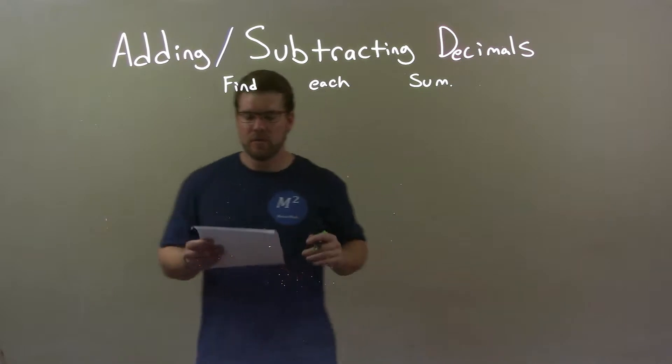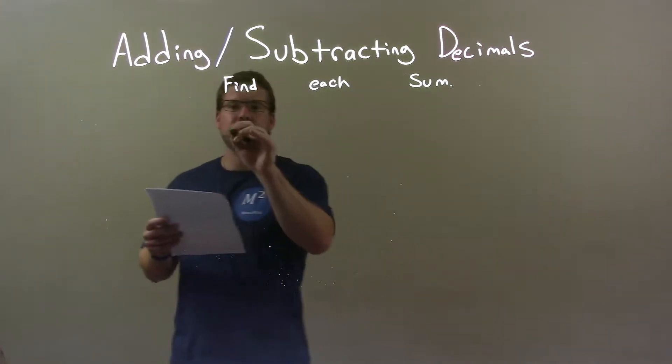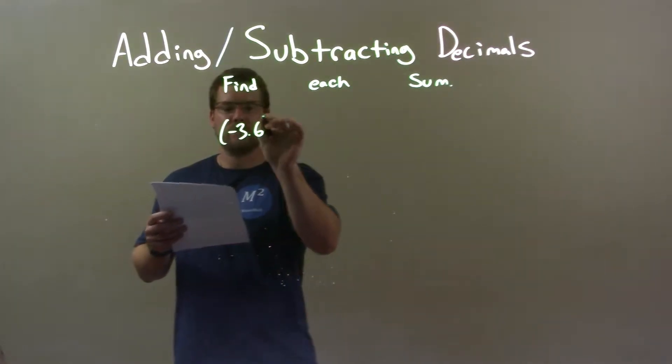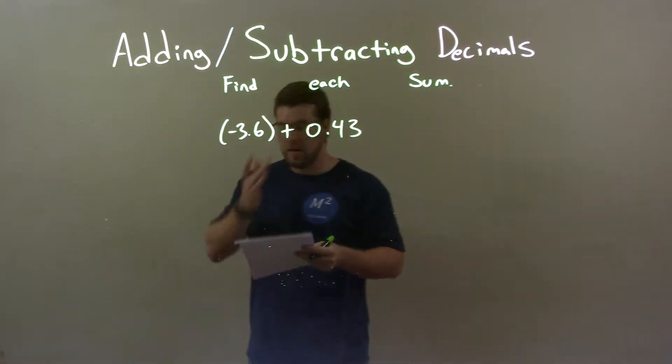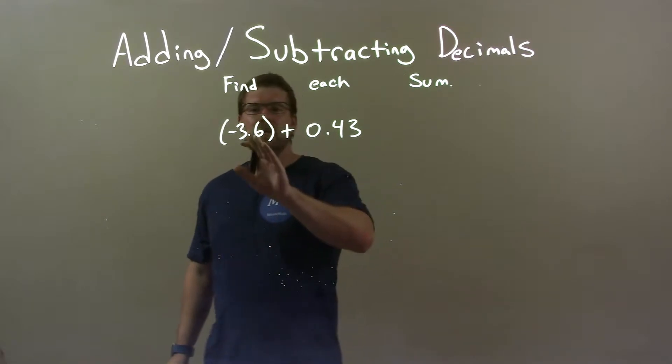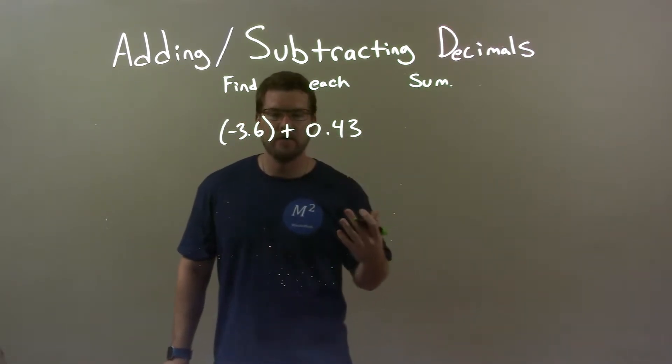If I was given these decimals, negative 3.6 plus 0.43. Alright. So when I add these together, this number is more negative than this one is positive.